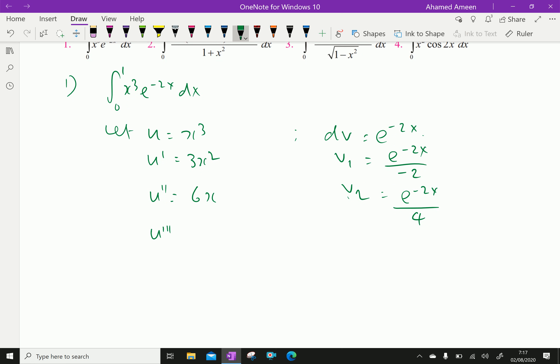Now, u3 dash means differential of 6x is 6 and v3 is integral of e power minus 2x over 4, which is e power minus 2x over minus 8.